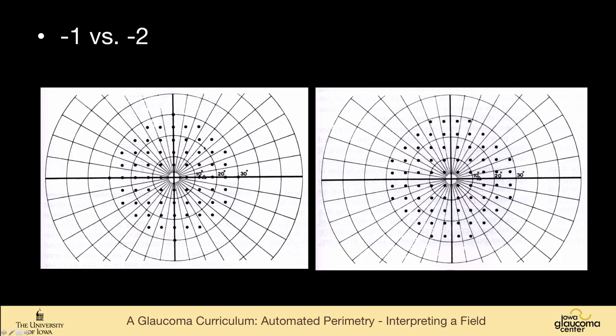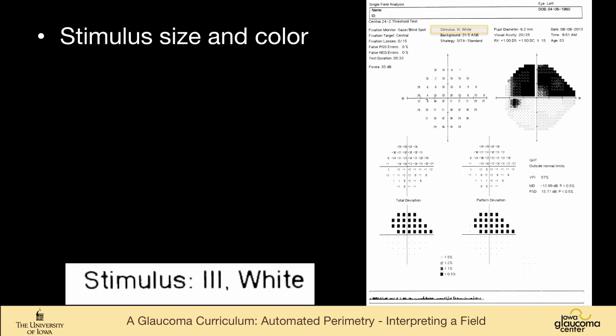So we always use the dash-2 also for neurologic disease. If you really wanted a very fine three-degree pattern, you could do both a dash-1 and a dash-2 and make a denser study of the visual field. But I never do that, but you could if you wanted to.